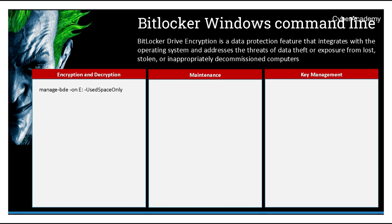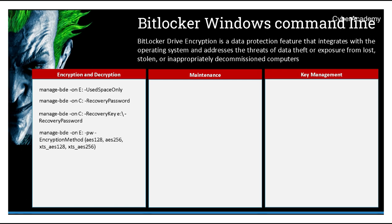With the manage-bde command line reference, we can turn on encryption on a given drive letter — in this case, the E drive — encrypting only the used space. The second example turns on encryption on the C drive with a recovery password option. The third option also adds a recovery key, which saves the password on a given drive letter. We can also turn on encryption on E drive with a password and specify an encryption method: AES 128, AES 256, XTS AES 128, or XTS AES 256.